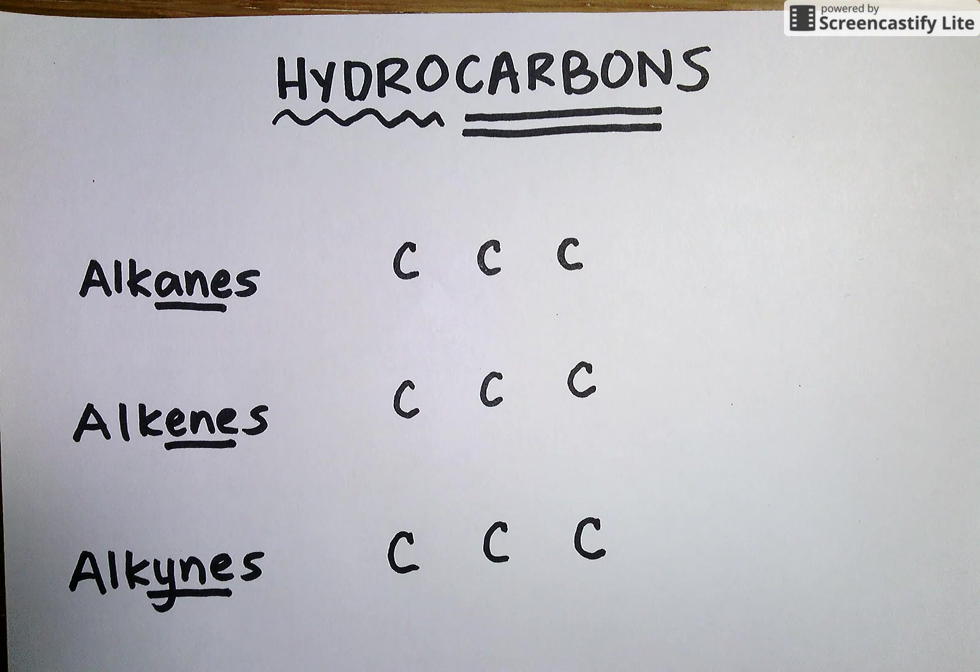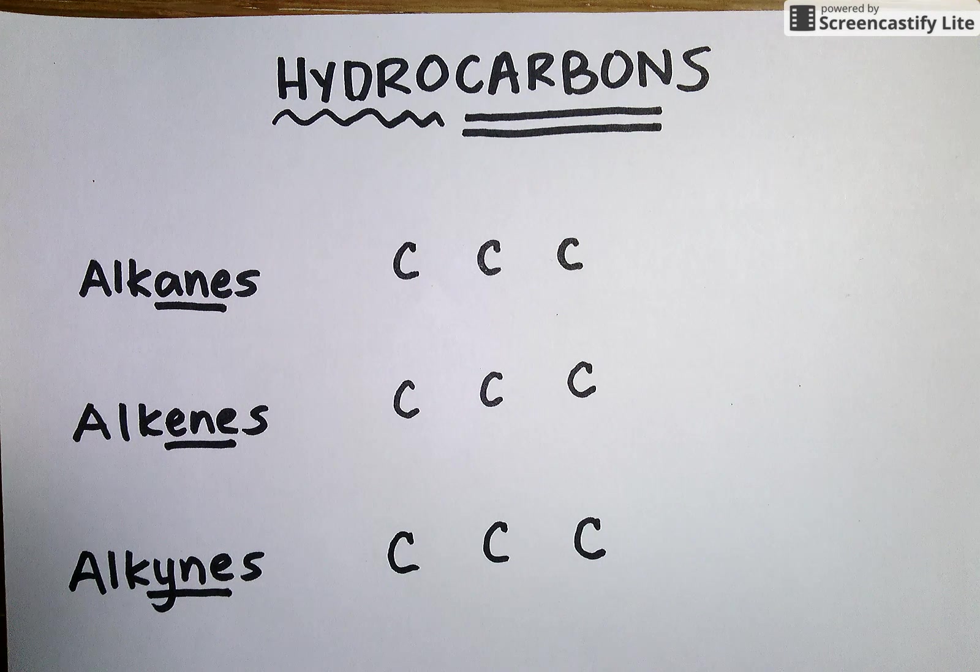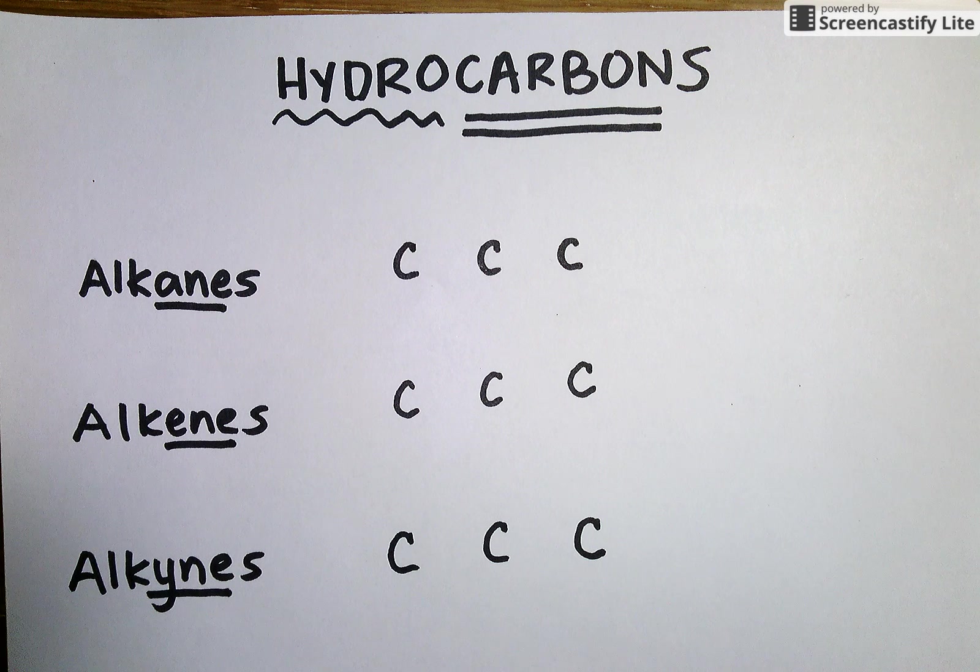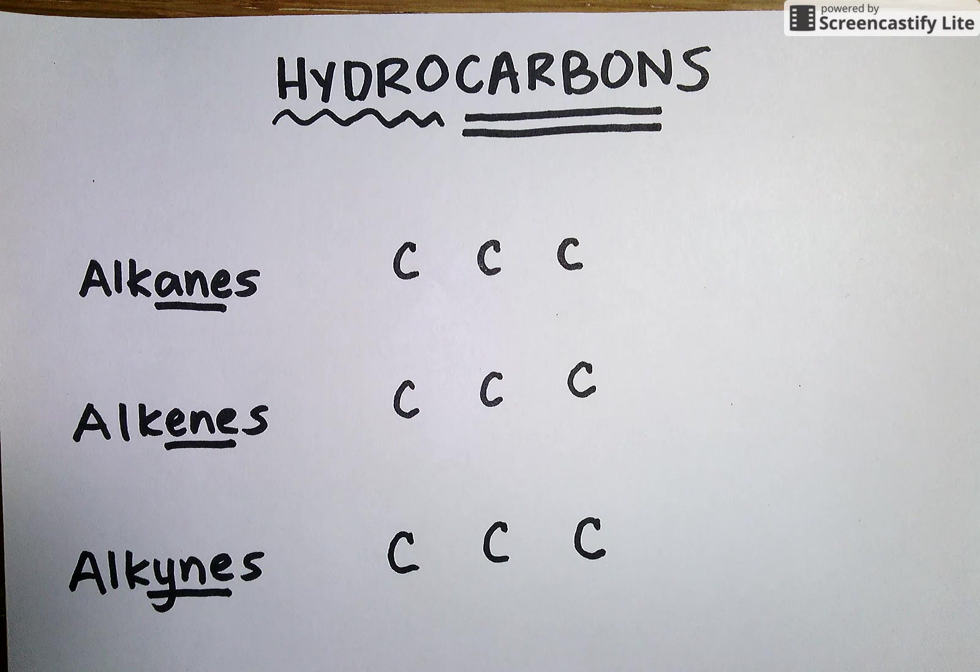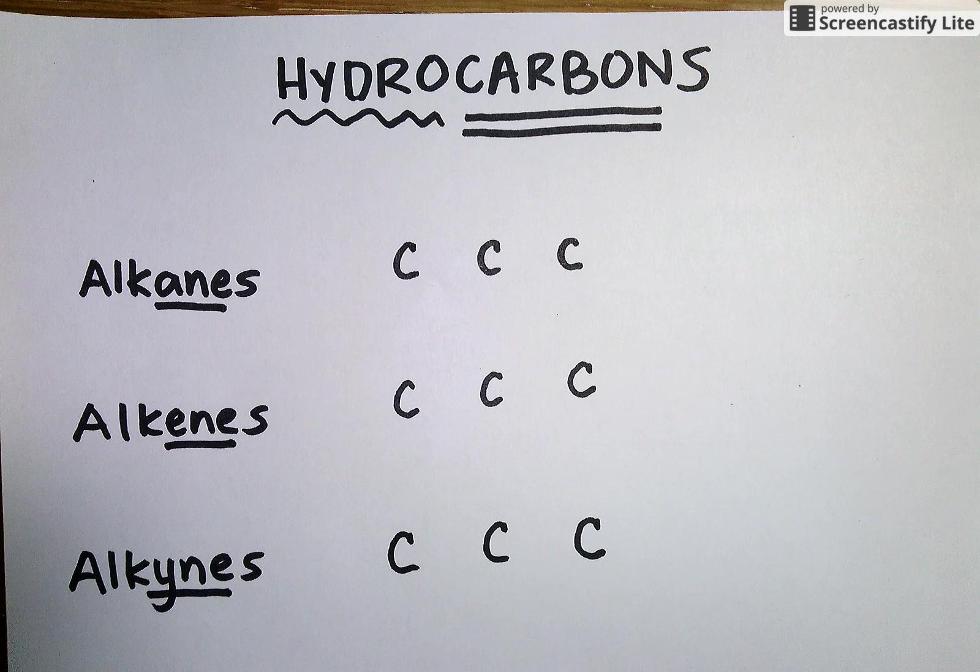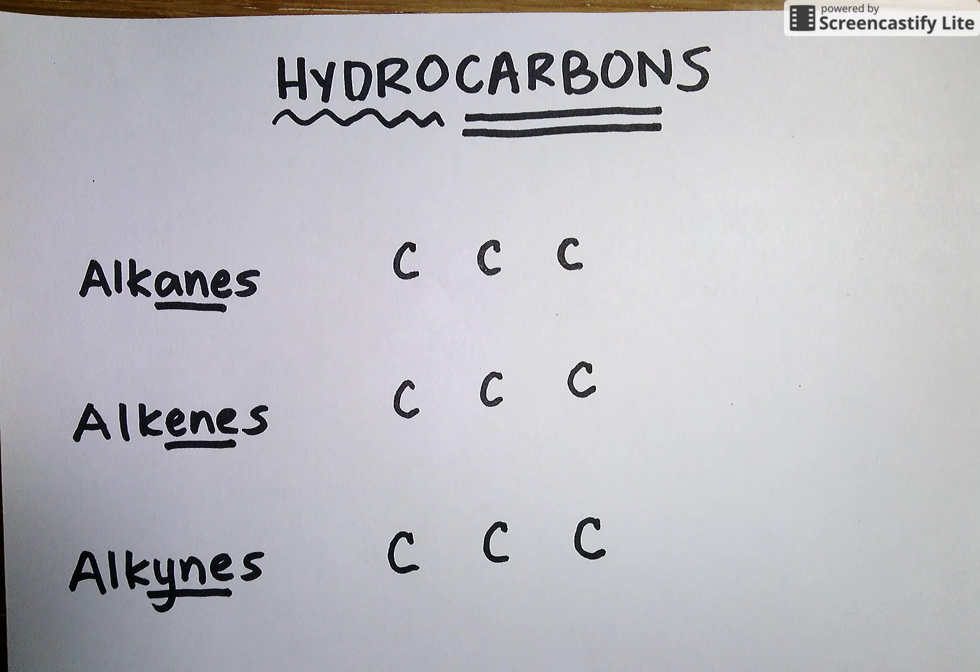So first and foremost we can classify almost all hydrocarbons as one of three classes of molecules: alkanes, alkenes, or alkynes. Our classification is dependent on the type of bond that we find between the carbon atoms in each of these types of molecules.